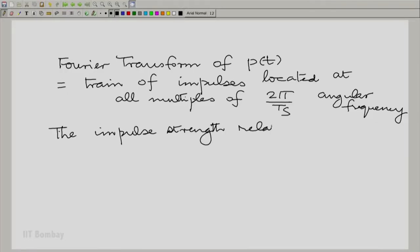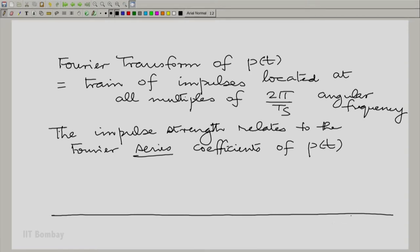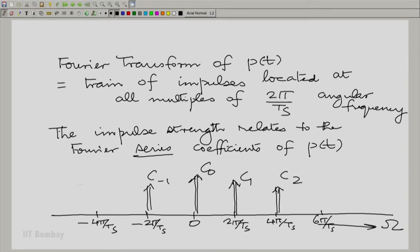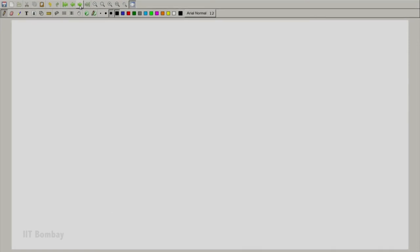The strength of the impulses relates to the Fourier coefficients here. So the impulse strength relates to the Fourier series coefficients. In fact, the situation would be like this. On the omega, capital omega axis, the angular frequency axis, you would have an impulse line at every multiple of 2 pi by Ts. The strength of this impulse would be proportional to C0. The strength of this one to C1 and so on. And we also saw the nature of C0, C1, C2 and so on.